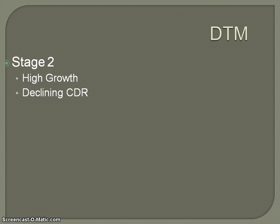Moving to stage two, which is characterized by high growth. What begins to happen in a stage two country is that you begin to have a declining death rate. This is different in different parts of the world. Historically, the reason you had a declining death rate initially in Western Europe and the United States is because of increased food production as a result of the Second Agricultural Revolution. There was also a better understanding of medicines, but the initial driver is increased food production, which can sustain larger populations.